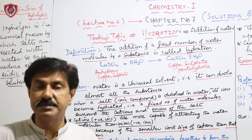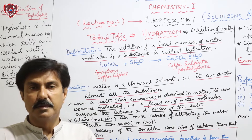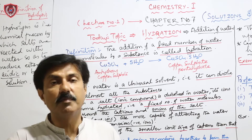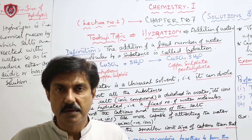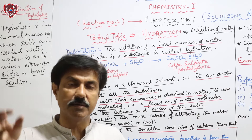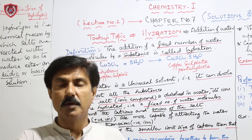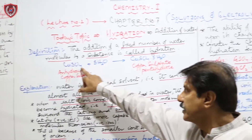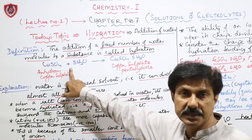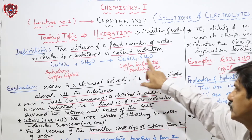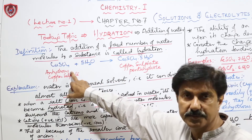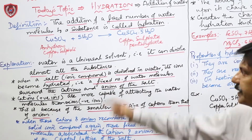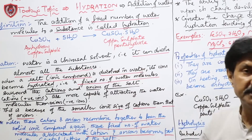Hydration means addition of water. The process by which we add a fixed number of water molecules to a substance is called hydration. مثال: copper sulfate (CuSO₄) میں 5 water molecules جوڑ دی جائیں تو CuSO₄·5H₂O بن جاتا ہے — یہ copper sulfate pentahydrate ہے۔ Anhydrous form میں پانی نہیں ہوتا؛ جب پانی جڑ جاتا ہے تو یہ process hydration کہلاتی ہے۔